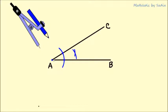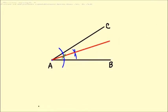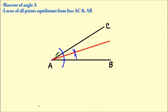This red line bisects angle A. This is also called the locus of all points equidistant from lines AC and AB, because any point you select along this line will be at the same distance from AC and AB.